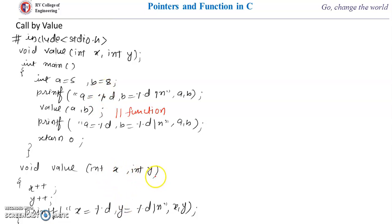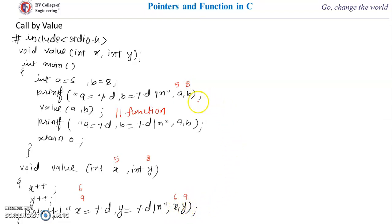So 5 and 8 are passed here as x and y. Now we are incrementing x++ and y++. So 5 becomes 6 and 8 becomes 9, and then we are printing x and y. So 6 and 9 will be printed inside the function. After the function returns, control comes back to main and we print a and b again, which will be 5 and 8 only. This is what happens in call by value — the copy of the actual parameter is passed, so changes made to the formal parameter do not change the actual parameter.